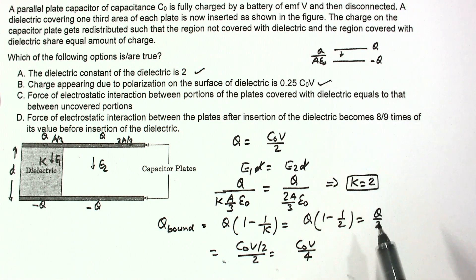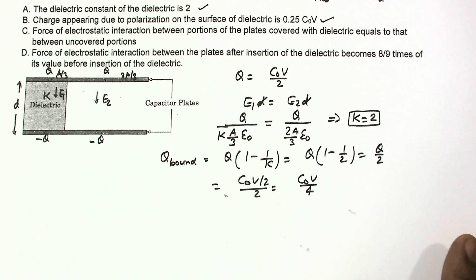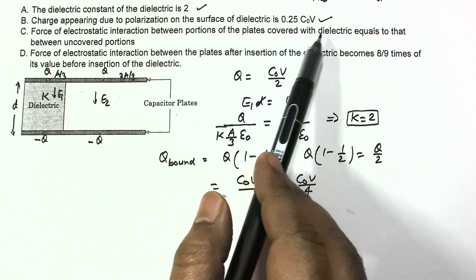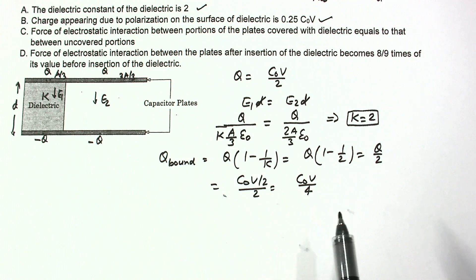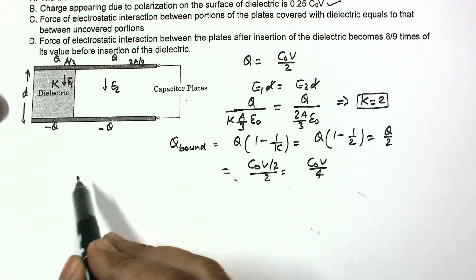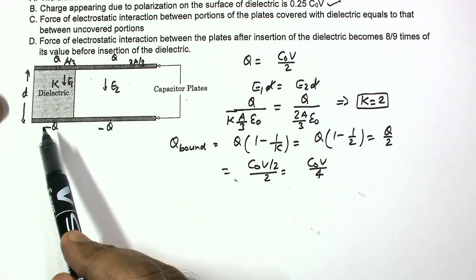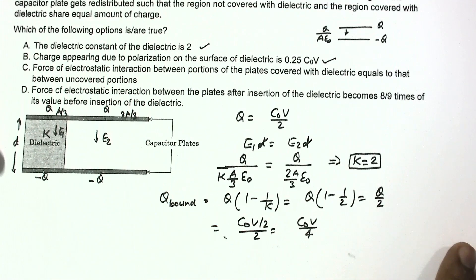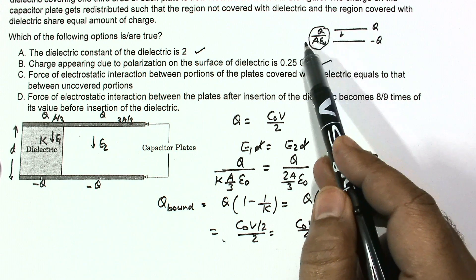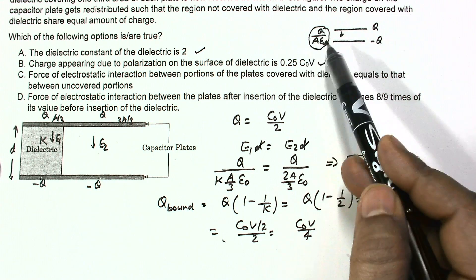Now going to the other options related to force calculation — the force of electrostatic interaction between the portions of the plates. The electric field created by one plate individually is q/(2ε₀), and this is used to calculate the electrostatic force between the covered and uncovered portions of the plates.